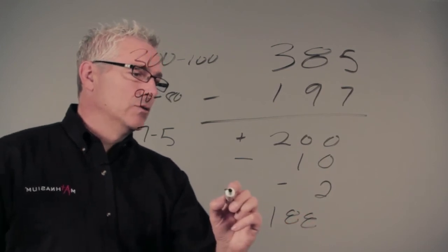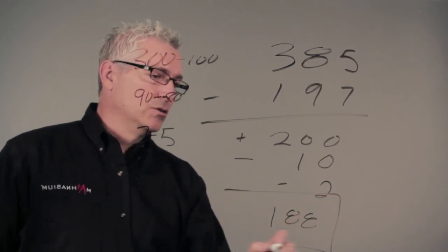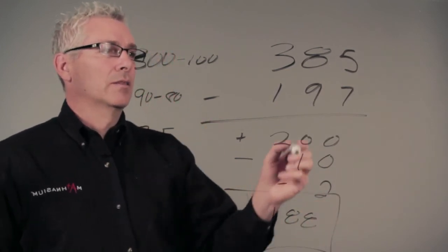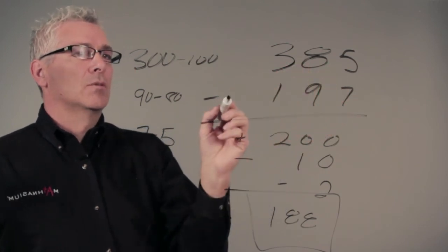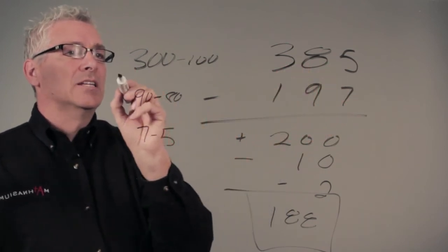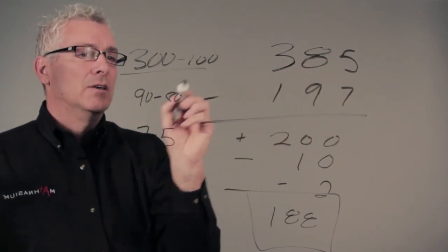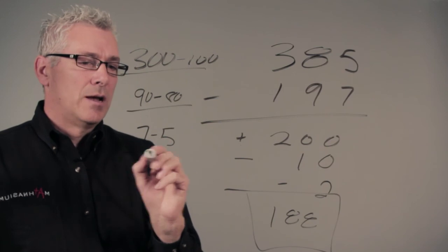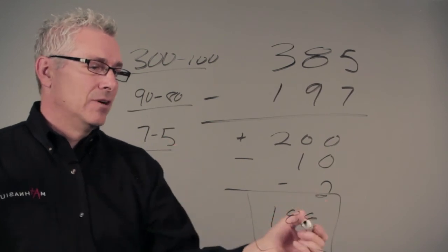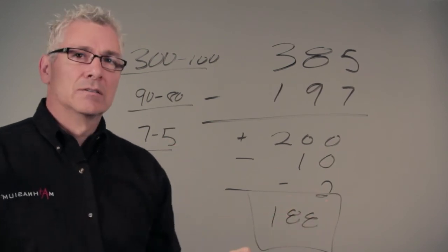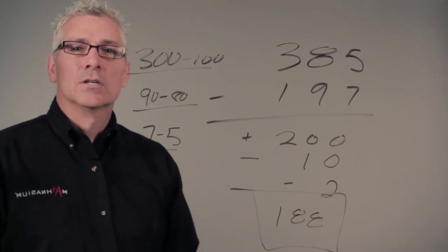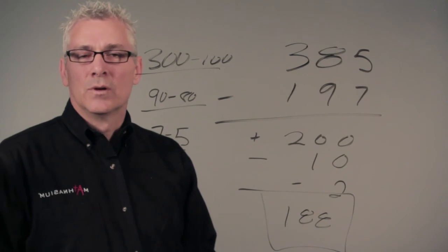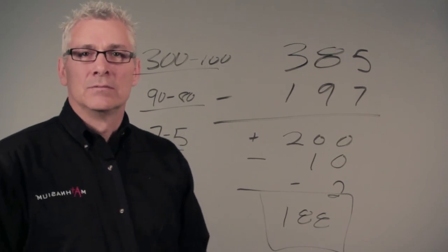That is how we use the partial differences subtraction method for subtracting larger numbers. We take each of our place values individually, subtract them, and add the final result together. Thanks for watching. This has been Mark Minzen with Mathnasium of Draper, Utah.